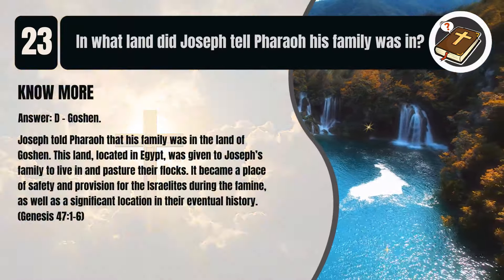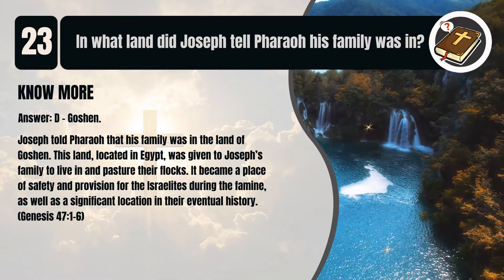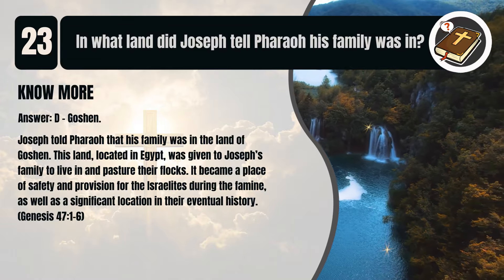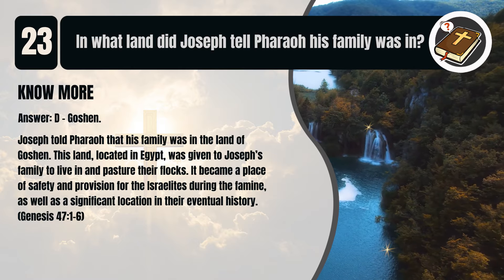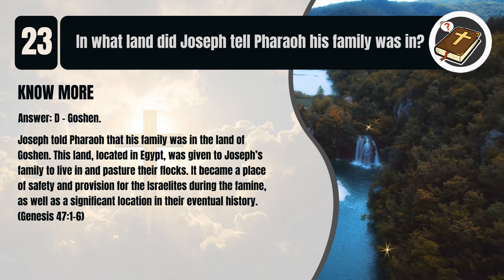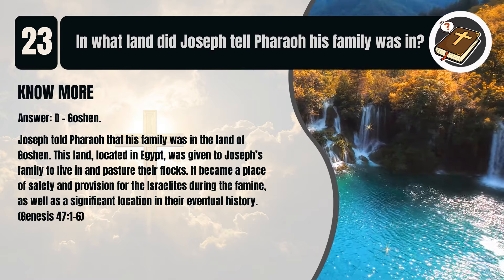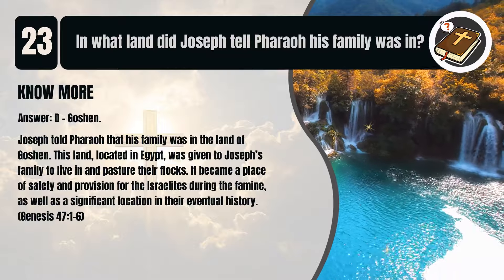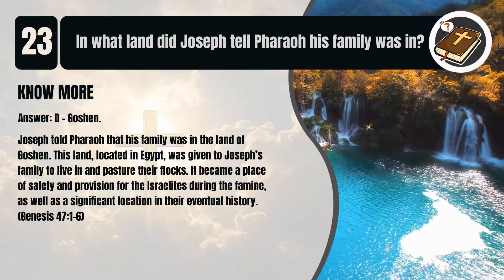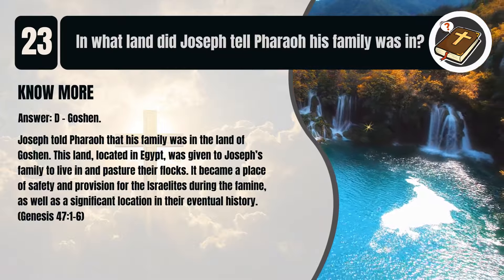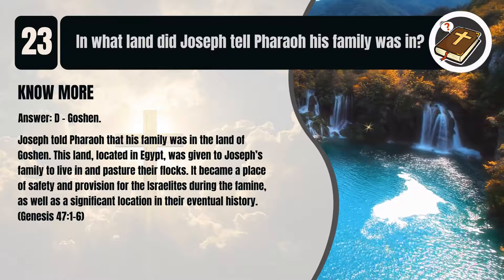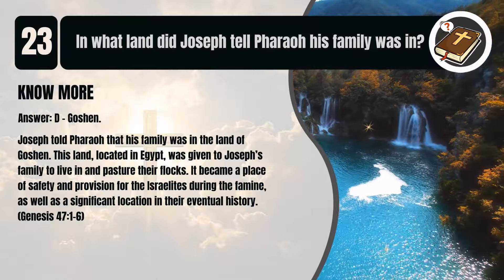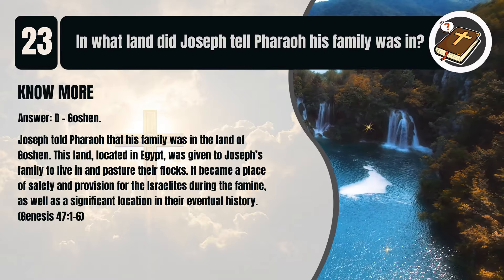That's D. Goshen. Joseph told Pharaoh that his family was in the land of Goshen. This land, located in Egypt, was given to Joseph's family to live in and pasture their flocks. It became a place of safety and provision for the Israelites during the famine, as well as a significant location in their eventual history. Genesis chapter 47 verses 1 to 6.